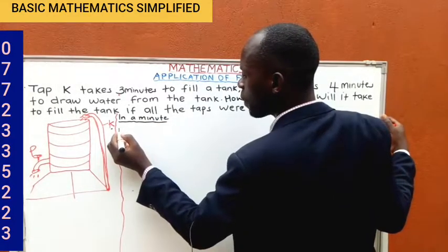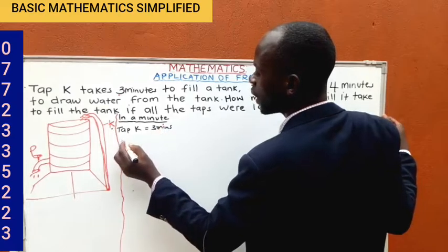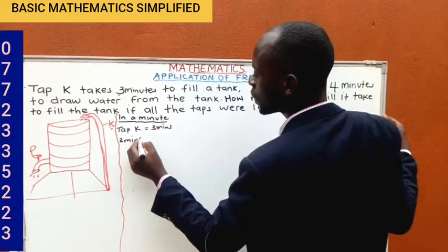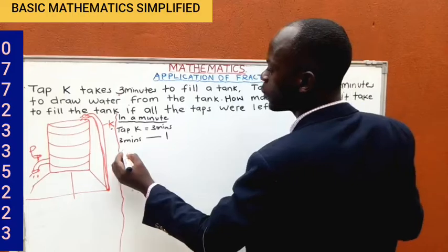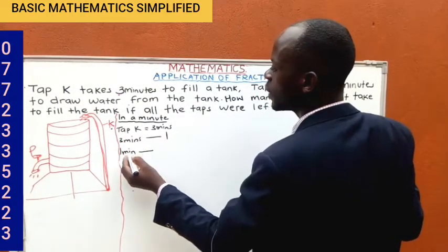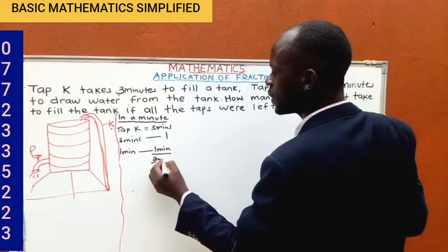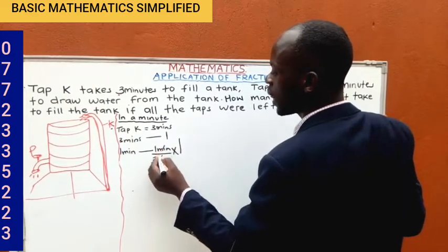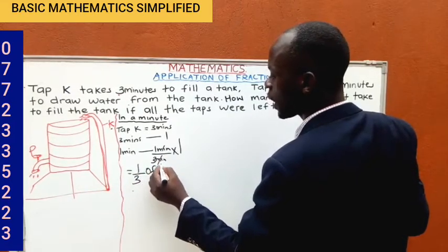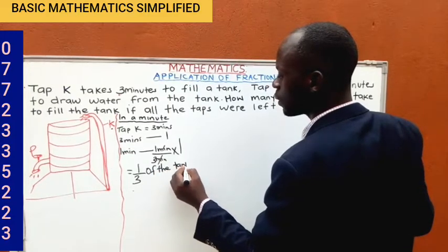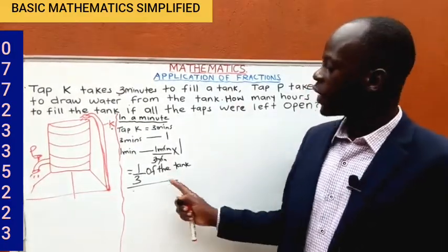Tap K takes a total of three minutes to fill the whole tank. If in three minutes Tap K can fill one whole tank, what about in one minute? Using direct proportion: one minute divided by three minutes, times one whole tank, equals one-third of the tank. So Tap K fills one-third of the whole tank in one minute.